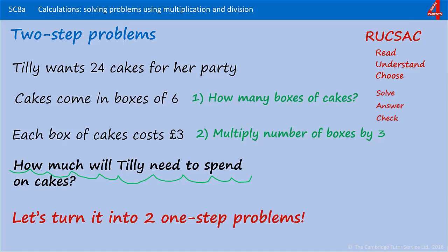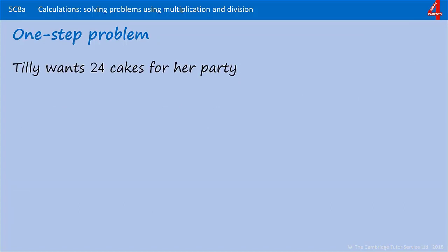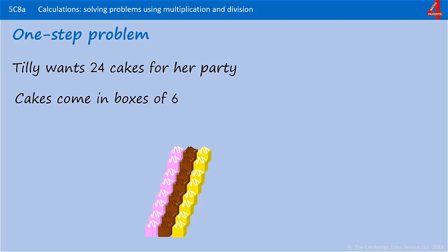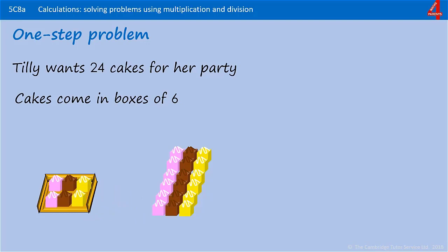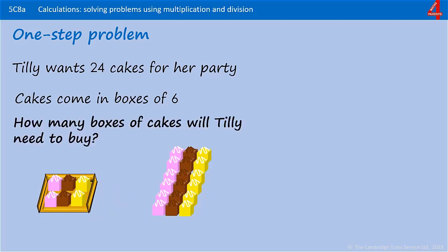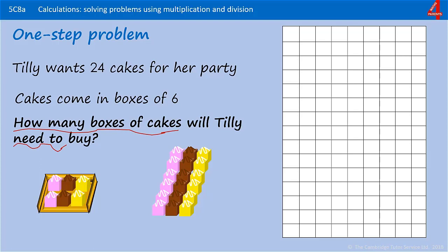With these kinds of questions it's easier to turn them into two separate one-step problems. So we're going to start with the first bit. Tilly wants 24 cakes for her party — here are the 24 cakes she's going to need. Cakes come in boxes of six, so here's one box and six of those cakes will go in that box. First of all, how many boxes of cakes will Tilly need to buy? Remember, this isn't the final question, but we need to answer this bit to then solve the next bit.